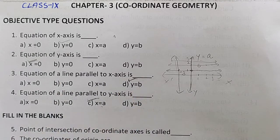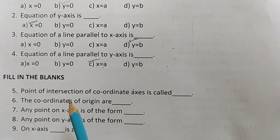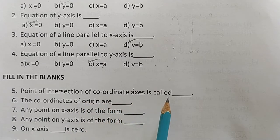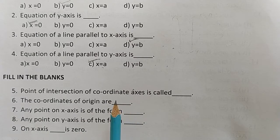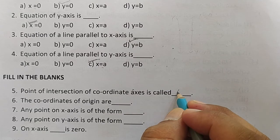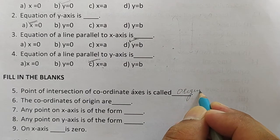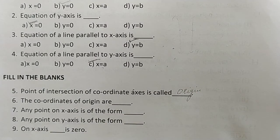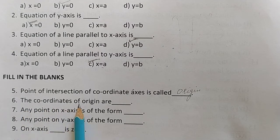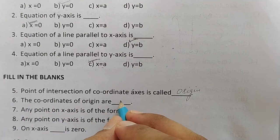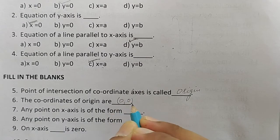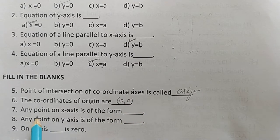Next question: the point of intersection of the coordinate axes is called the origin. The coordinates of the origin are (0, 0).